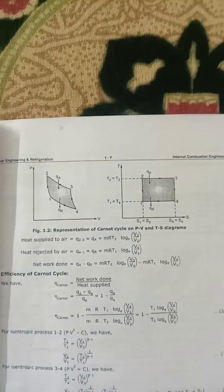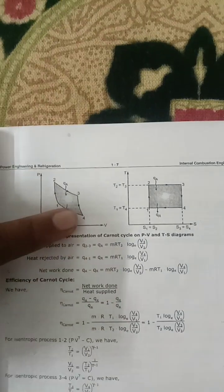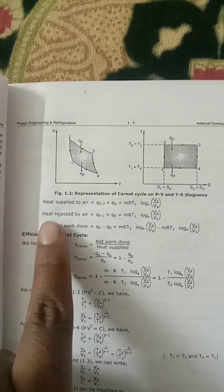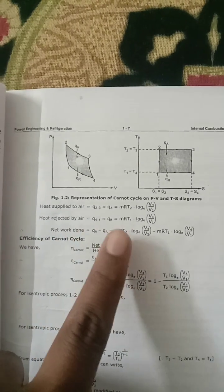2 to 3 is the isothermal heat addition process. 3 to 4 is the isentropic expansion process, and 4 to 1 is the isothermal heat rejection process. This diagram is the PV diagram, and this diagram is the TS diagram. The heat supplied to the air is Q2 to 3, and the heat rejected by the air is Q4 to 1.